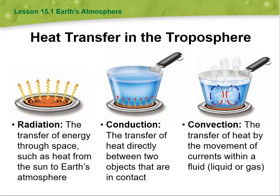Next, we are moving to heat transfer in the troposphere. We have radiation, conduction, and convection. Radiation is the transfer of energy through space, such as heat from the sun to Earth's atmosphere. Conduction is the transfer of heat directly between two objects that are in contact. Convection is the transfer of heat by the movement of currents within a fluid — liquid or gas.